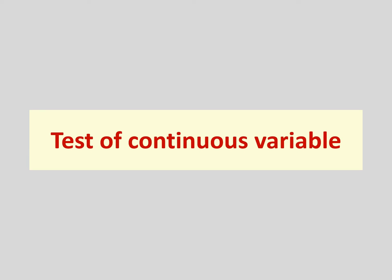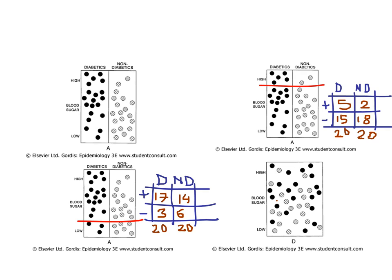Now let's consider tests that don't give you just a yes/no result — tests that don't simply say you have or don't have a disease. For example, when we measure blood sugar, it gives you a measurement of blood sugar concentration — a continuous variable. The healthcare provider needs to determine whether that individual has diabetes or not, which requires choosing a cutoff. In figure A, we see 20 individuals (black dots) who are really diabetic by gold standard, and another 20 who are non-diabetics.